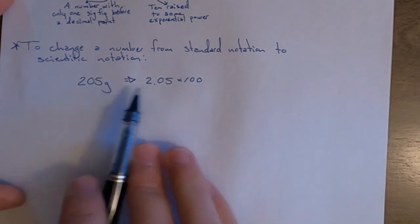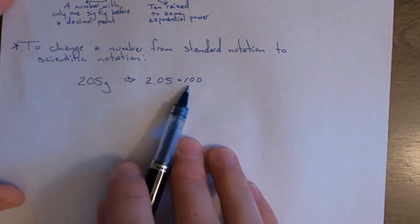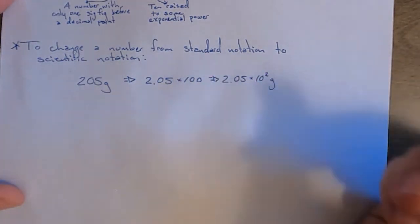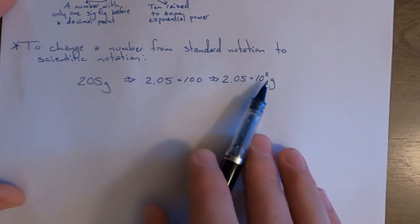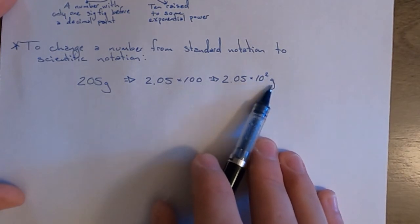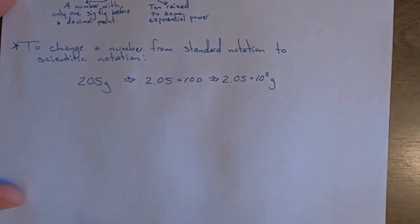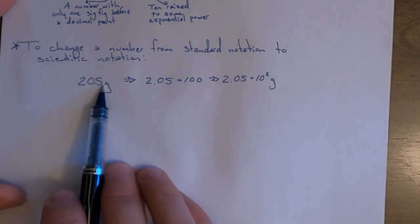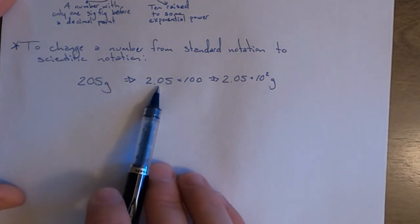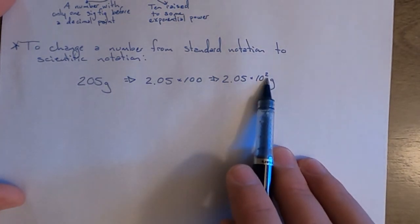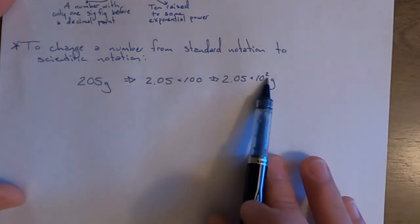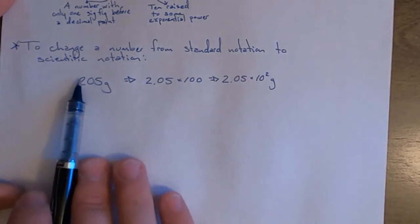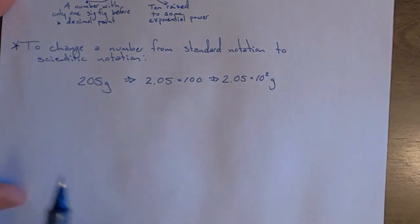So 2.05 times 100 would give you 205 grams — they mean the same thing. And 100 is equal to 10 to the second power. So we go from 205 to 2.05 times 100, and then replace 100 with 10 to the second power. The shortcut is you think about where the decimal point would be. If you are moving the decimal point to the left to get the first factor with one significant figure, you will have a positive exponent representing how many spaces to the left the decimal point was moved. Conversely, moving the decimal point to the right gives a negative exponent. A positive exponent represents a large quantity; a negative exponent represents a small quantity.